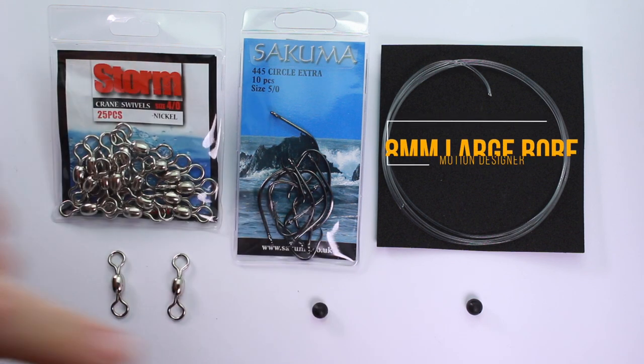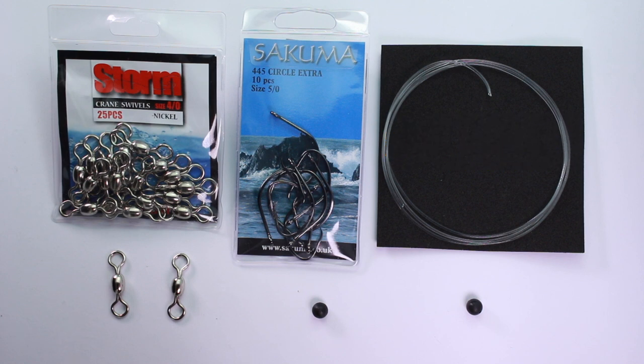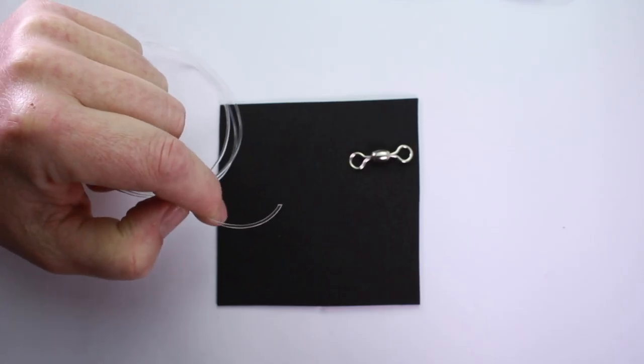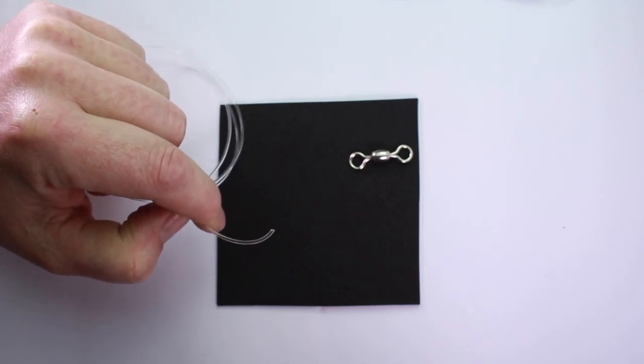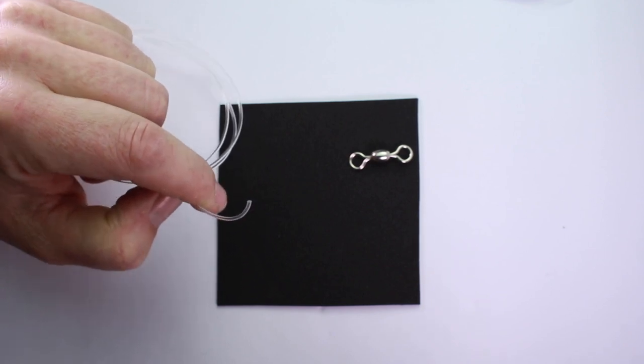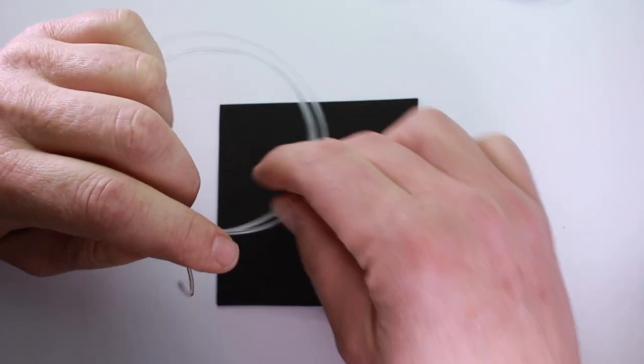And then the beads as well, we've got 8mm beads here. All we're doing is a simple pulley rig. It's just a little bit harder because we're tying it in mono. So let's have a quick go at putting this rig together. You start off with this mono. You can actually buy it in the tackle shops in lengths rather than buy a whole spool of it because it works out quite expensive, this sort of line. So what you want to do is cut...